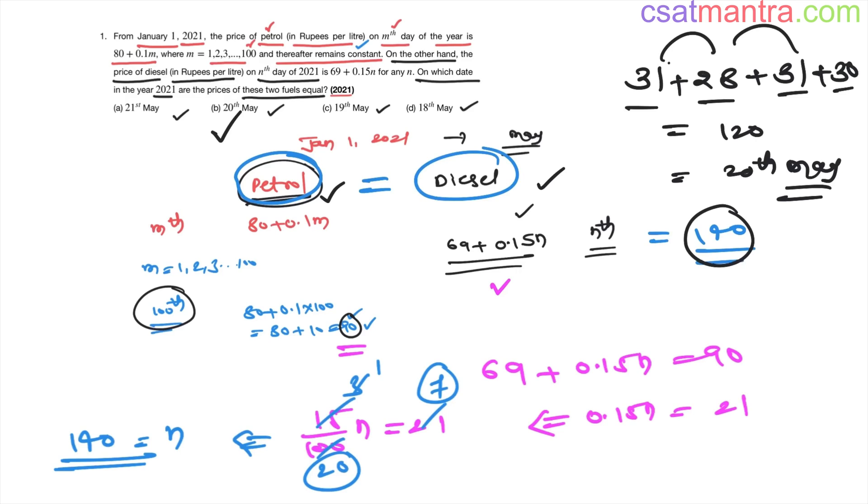Very easy question. Don't have this prejudice that questions which look lengthy - three or four lines - are difficult ones. Not at all. All you have to do is go sentence by sentence, line by line, and solve the equations. Then you'll be able to solve the problem easily. All we did is find the value on the 100th day, which is 90, and we equated this to diesel price, found the value of n which is 140, then calculated the date.